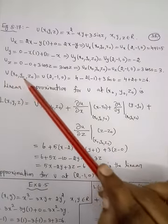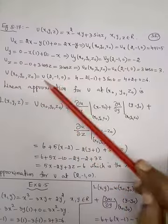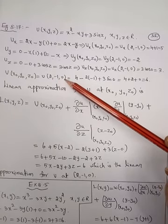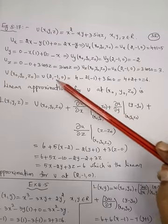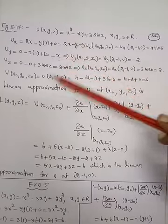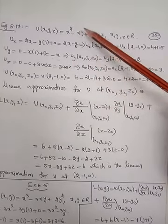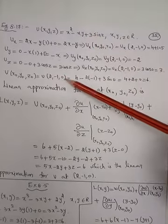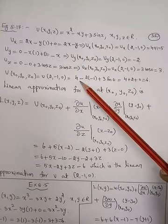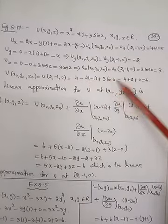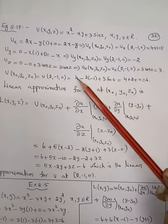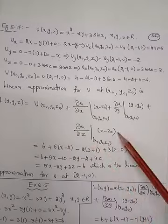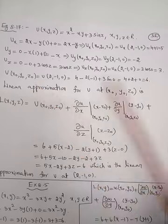Now we compute u(x₀, y₀, z₀), that is u(2, -1, 0). Substituting x=2, y=-1, z=0 into u = x² - xy + 3sin(z): 2² = 4, minus 2×(-1) = plus 2, plus 3sin(0) = 0. So 4 + 2 + 0 = 6. Therefore u(2, -1, 0) = 6.